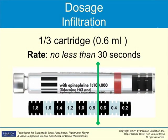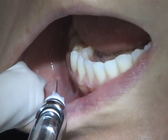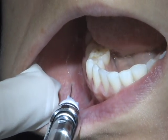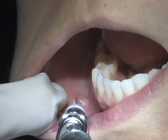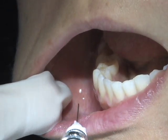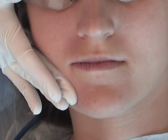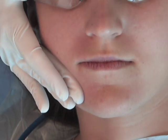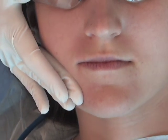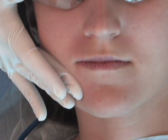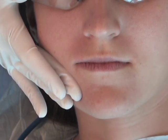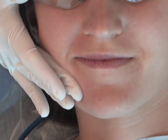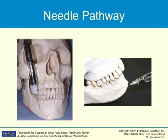With either method, deposit approximately one-third of a carpule over 20 to 30 seconds. If the injection is completed at this point, only soft tissues innervated by the mental nerve will be anesthetized. After gently withdrawing the needle and making it safe, apply pressure at the injection site for a minimum of one full minute. This pressure can be applied by the clinician or by the patient. To obtain anesthesia of the teeth or pulpal tissue, gentle finger pressure must be maintained directly over the injection site to increase the volume of solution entering the mental foramen. This may be accomplished with either intraoral or extraoral pressure.